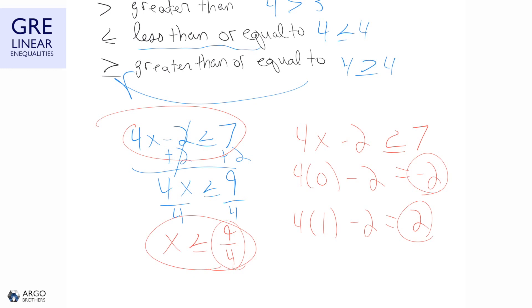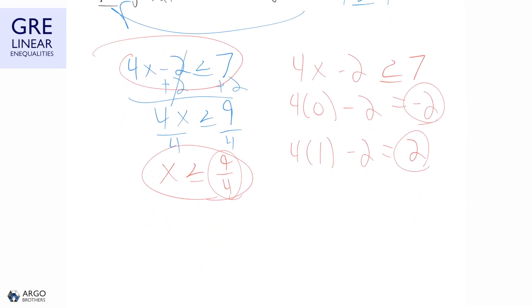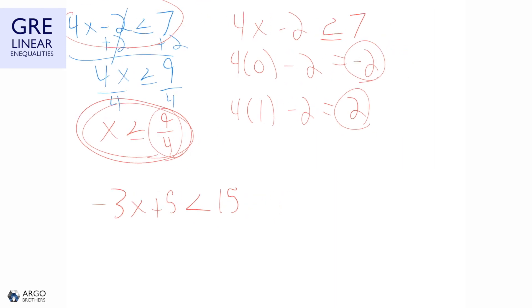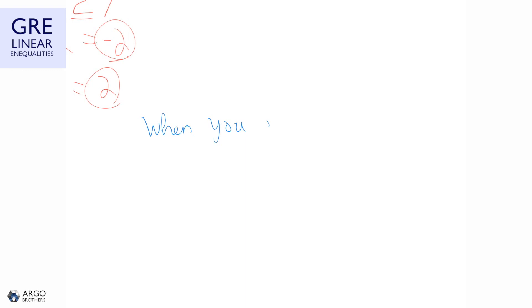Two linear inequalities can share some of the same solutions, which is not the case for equalities. Now, there is a special rule you need to know for inequalities: when you divide or multiply by a negative number, you must switch the inequality sign.